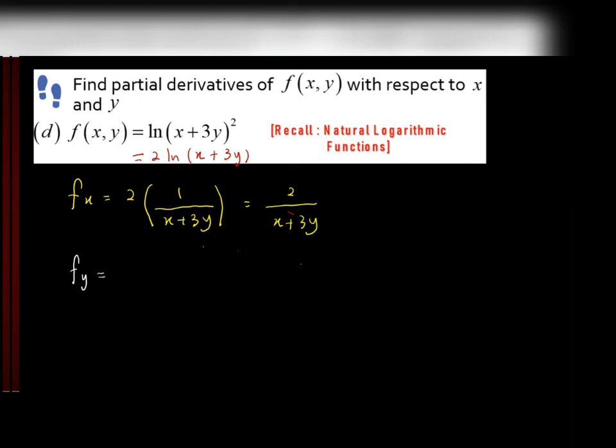Now let's differentiate with respect to y. So we take 1 over x plus 3y and we have to differentiate that x plus 3y with respect to y. We are going to obtain the answer 3. And then, we simplify. We get 6 over x plus 3y.